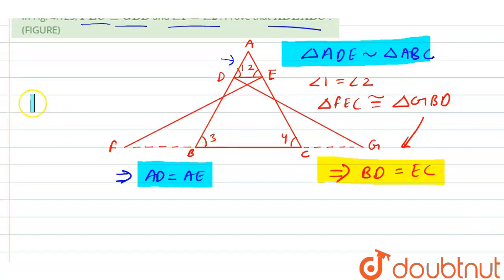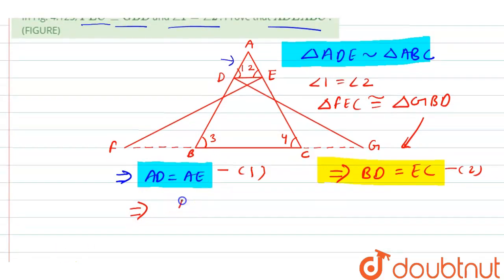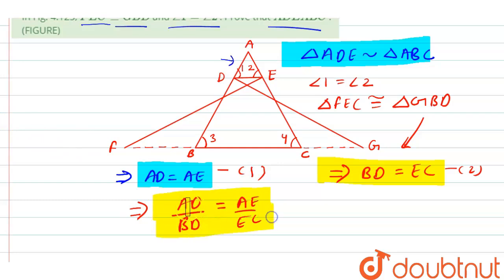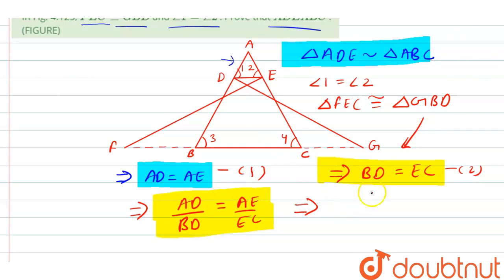Now we have these two equations: BD = EC (equation 1) and AD = AE (equation 2). Putting them in ratio form, we can write AD/BD = AE/EC. Since both ratios are equal, this implies that DE is parallel to BC.